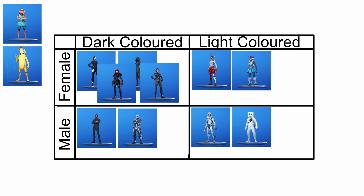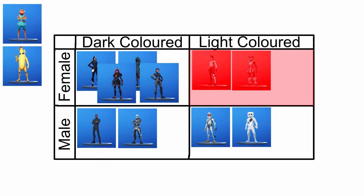So that's how you would sort things into a Carroll diagram. Remember the Carroll diagram must have a yes or a no answer — they're either wearing dark or they're wearing light, there's no in between. They're either male or they're female, no in between. So this segment here is females wearing dark coloured skins, this segment is females wearing light coloured skins, this section is males wearing dark coloured skins, and this section is males wearing light coloured skins. Happy sorting!